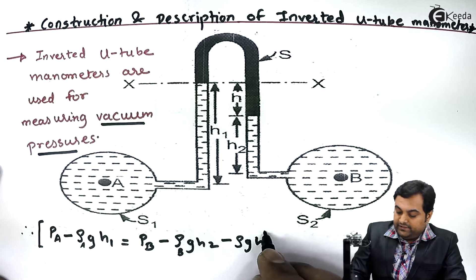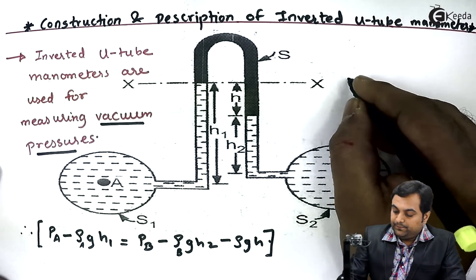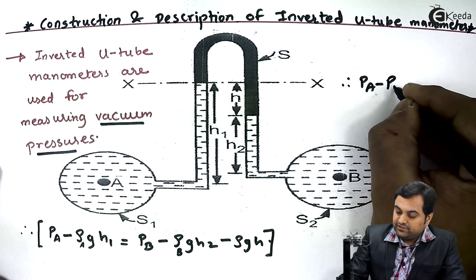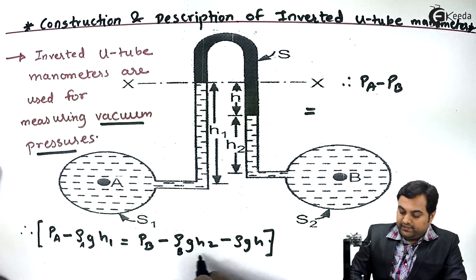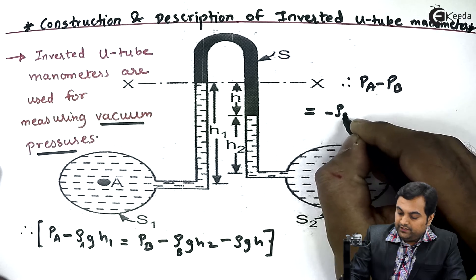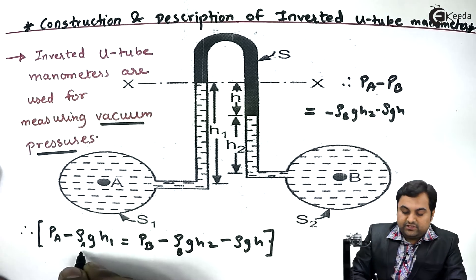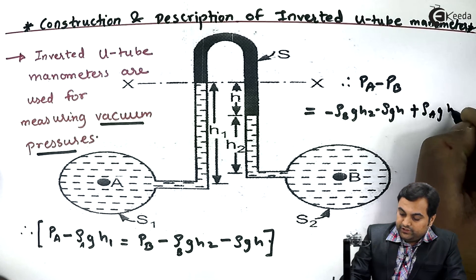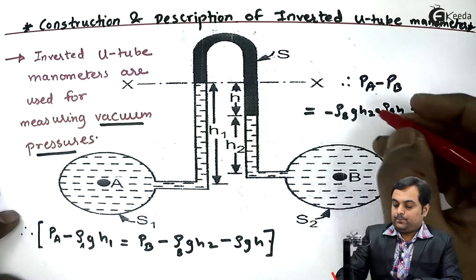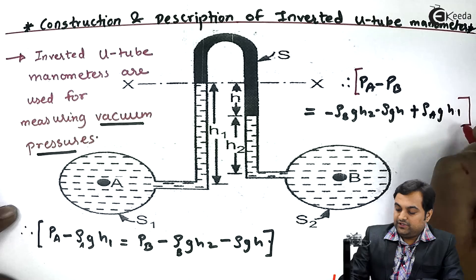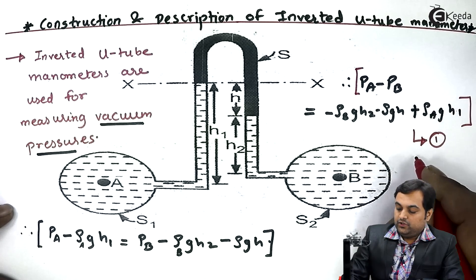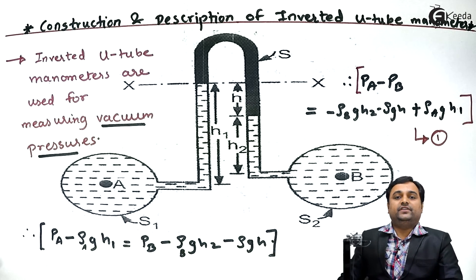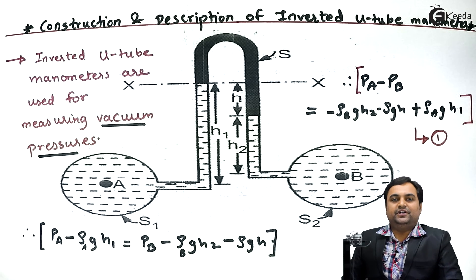Now in order to calculate the pressure difference, we can write: pressure in A minus pressure in B equals minus rho_b × g × h2 minus rho × g × h, plus rho_a × g × h1. By using this equation — equation 1 — we can calculate the pressure difference between two different pipelines. So in this video we have seen how to calculate vacuum pressure using the inverted U-tube manometer.